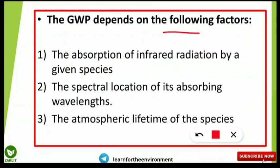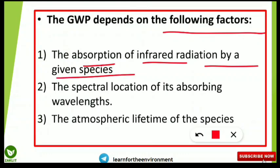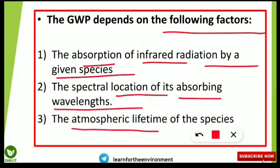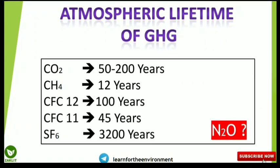The Global Warming Potential of a greenhouse gas depends on three factors: (1) the absorption of infrared radiation by that species — how much infrared radiation it absorbs; (2) the spectral location of its absorbing wavelength — at what wavelength the gas absorbs; and (3) the atmospheric lifetime — how long the gas persists in the atmosphere without breaking down. These three factors together determine the GWP of any greenhouse gas.